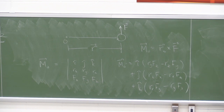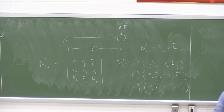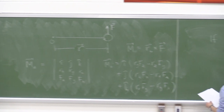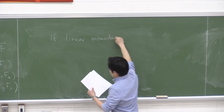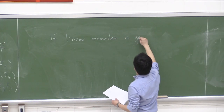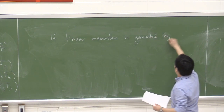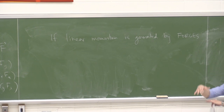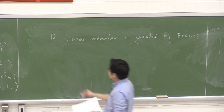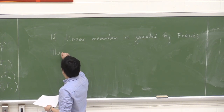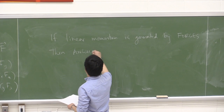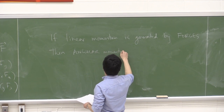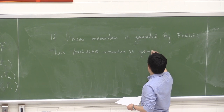How does this apply to angular momentum? Here's the link. If linear momentum is generated by forces — an external force leads to an impulse, gives an object linear momentum — then angular momentum is generated by moments. Any type of moment or torque, a twisting action on a particle, can be a moment impulse that adds to an object's angular momentum.